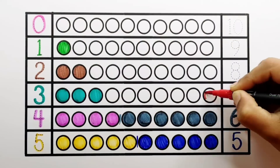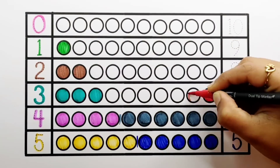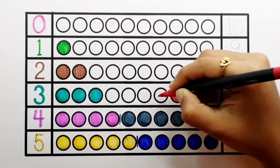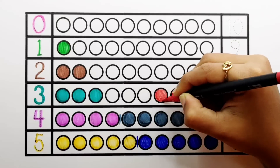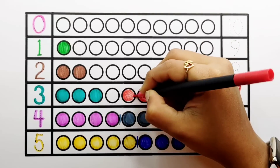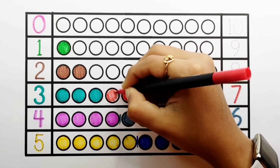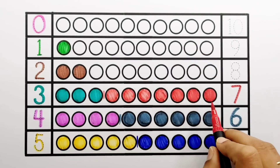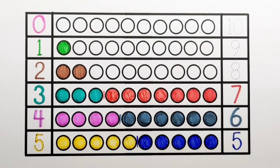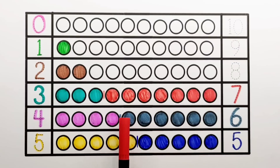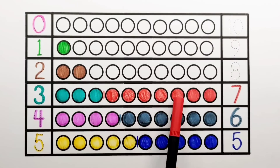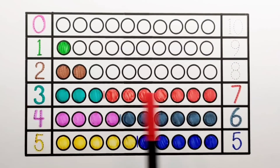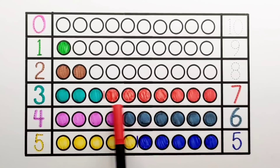Number 7. 1, 2, 3, 4, 5, 6, 7 — 7 balls. 3 plus 7 makes 10. 1, 2, 3, 4, 5, 6, 7, 8, 9, 10. 3 plus 7 equals 10.